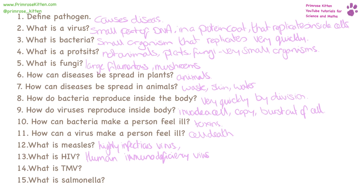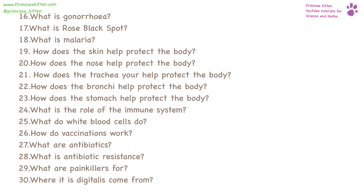What is TMV? This is tobacco mosaic virus, and it infects the leaves of plants, causing them to have a speckled, blotchy, or mosaic appearance. What is Salmonella? You are going to know this more commonly as food poisoning. Gonorrhea is a bacteria that will give you a nasty sexually transmitted disease.